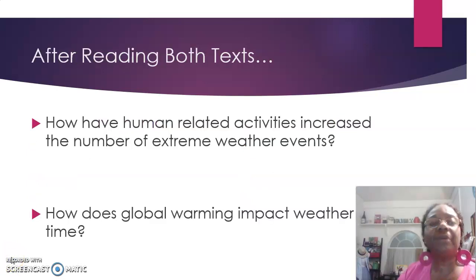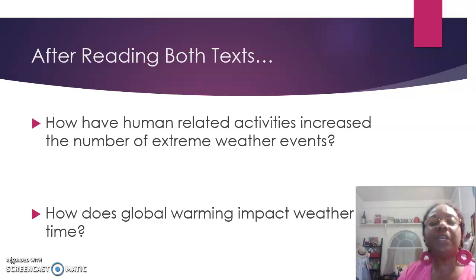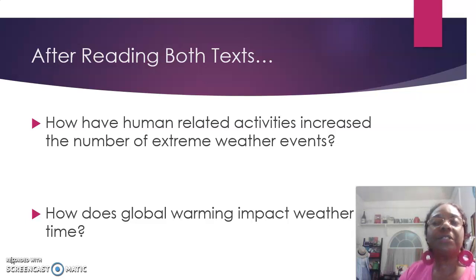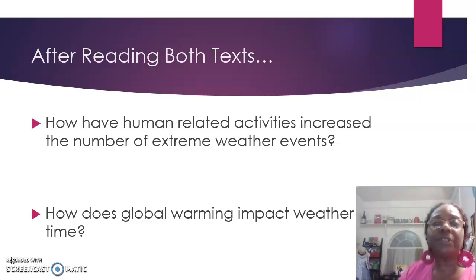Now that you've read both texts, let's look at the last slide. After reading both texts: How have human-related activities increased the number of extreme weather events? And the second question: How does global warming impact weather over time? Two big questions, but I know that you can answer them because I know that you're a good reader. Share those questions with a family member or friend and then write down your answers.